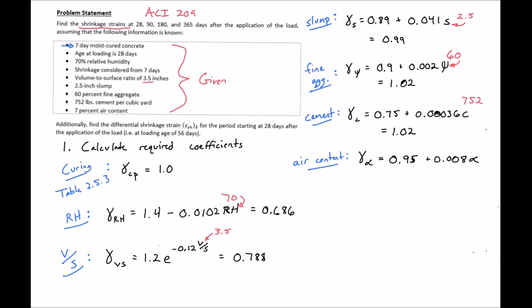And our final factor is our air content factor. In our case we have 7% air, so we'll plug in our 7% and we'll have our air content factor to be 1.01. After we have calculated all of our factors,